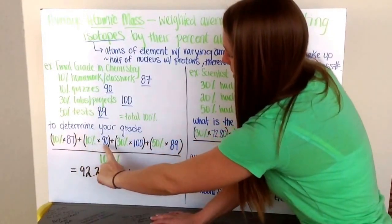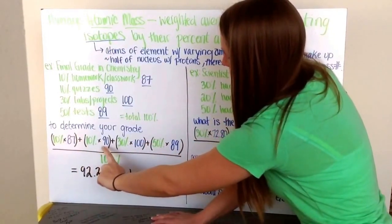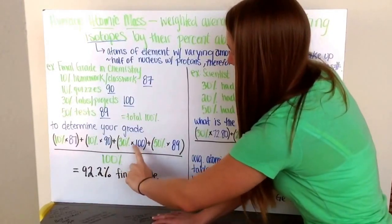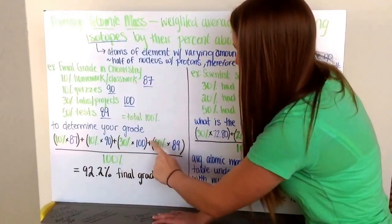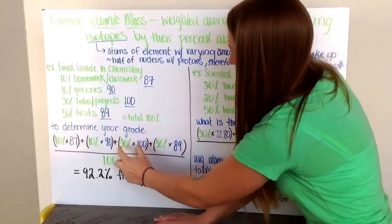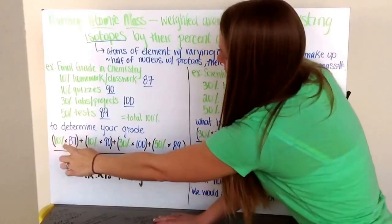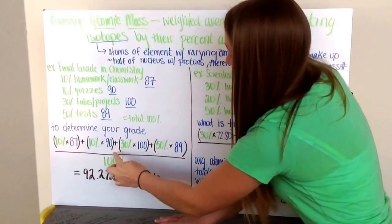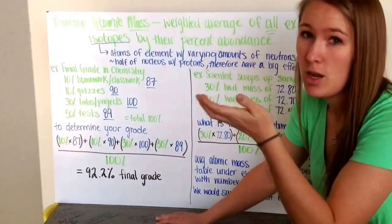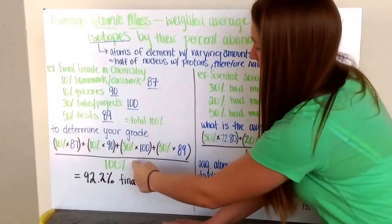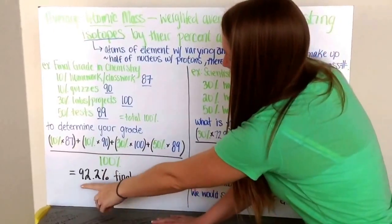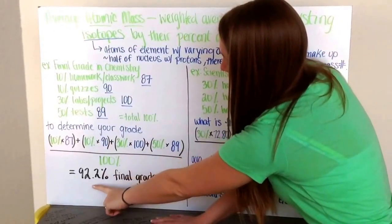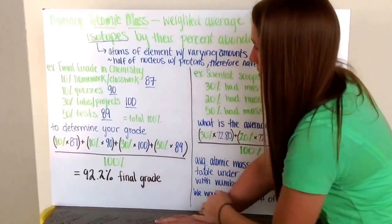plus 10% of 90 for quizzes, plus 30% of 100 for labs and projects, plus 50% of 89 for tests. Your total percent is 100%, so to get an average we divide by our total. Your average grade in chemistry would be 92.2%, which is your final grade.